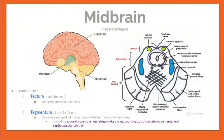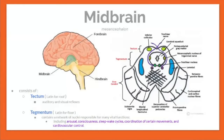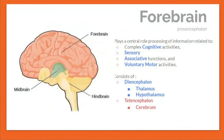The midbrain, or mesencephalon, consists of the tectum and tegmentum. The tectum handles auditory and visual reflexes. The tegmentum contains a network of nuclei responsible for many vital actions including arousal, consciousness, sleep-wake cycles, coordination of certain movements, and cardiovascular control.